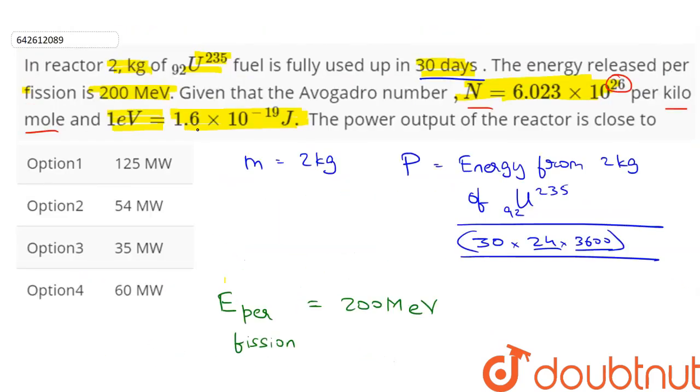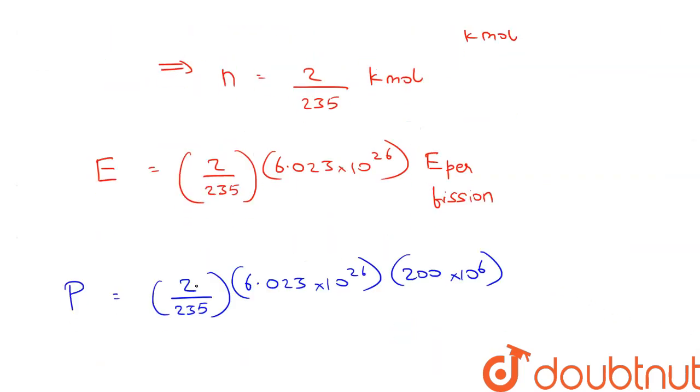The energy coefficient is 200 into 10 to the power 6 electron volts. And 1 electron volt is equal to 1.6 into 10 to the power minus 19 joules. So if we want the power in joules per second, then we need to multiply by 1.6 into 10 to the power minus 19.